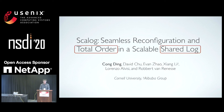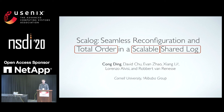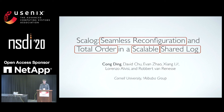The first, it is a totally ordered shared log. The second, it is unusually scalable. As you will see, it exceeds the throughput of its closest competitor by almost two orders of magnitude. The third, it is the only totally ordered shared log that can be reconfigured to increase or decrease capacity without affecting availability.